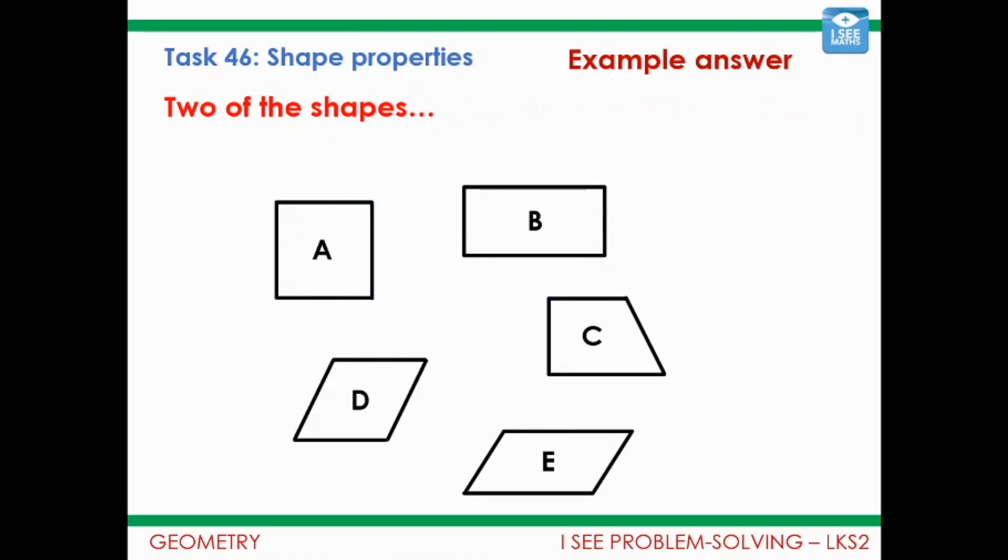Two of the shapes, it gets trickier now, two of the shapes have exactly two acute angles. You can see that shape C has one acute angle but D and E have two acute angles exactly. One of the shapes? Well one of the shapes has got four lines of symmetry, the square. I've marked on all the lines of symmetry those shapes have there and it's only shape A that has four lines of symmetry. Of course I would love to hear other possible answers that you've found.